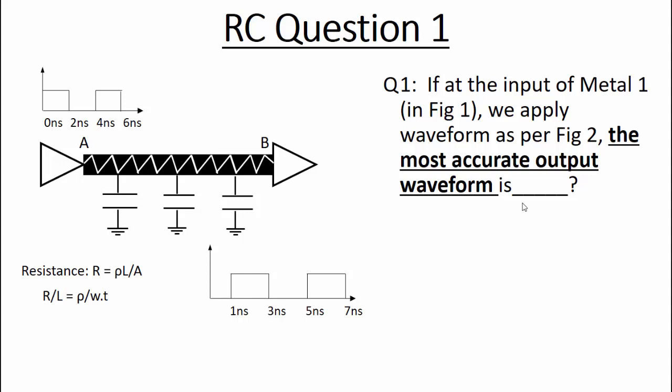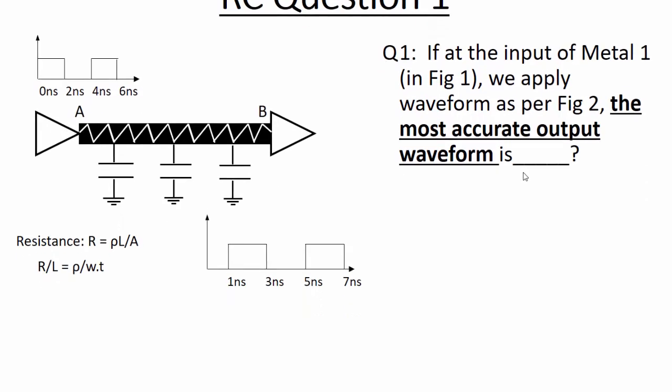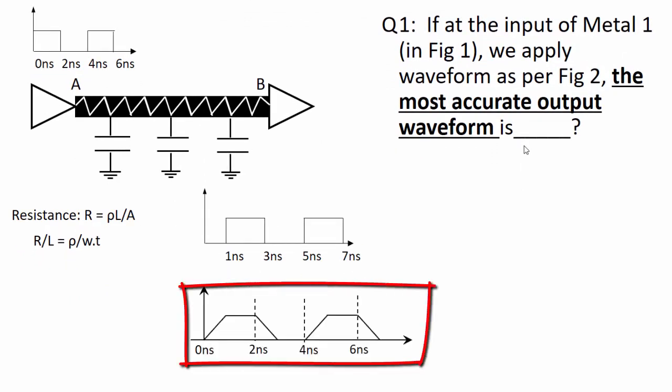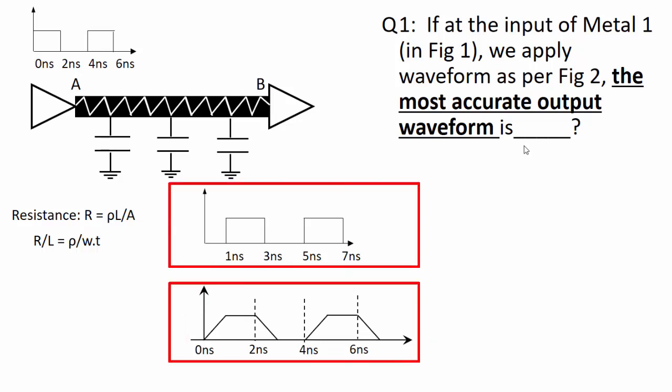Every RC circuit has a rise time and fall time based on the resistance and capacitance of the wire. If I consider only that particular part, then the waveform will be something like this. Now if you superimpose these two waveforms—the shift in the waveform when it goes from A to B and the RC effect—then you will get the waveform as per option C.